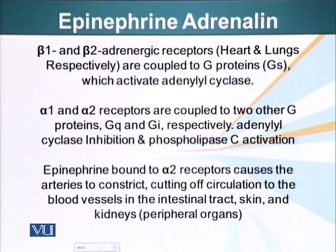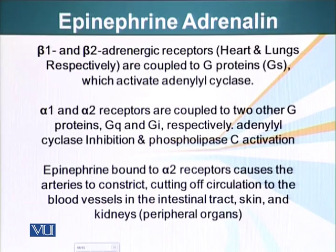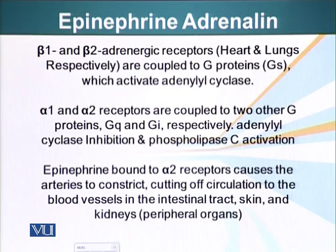Epinephrine bound to alpha-2 receptors causes arteries to constrict, cutting off circulation to the blood vessels in the intestinal tract, skin, and kidneys — the peripheral organs. This epinephrine release also restricts the blood supply to non-essential organs. Epinephrine is released in response to stress, so it is the fight-or-flight hormone. Once an animal is in danger, the entire cellular machinery is geared to providing extra strength to fight or flee from a predator.